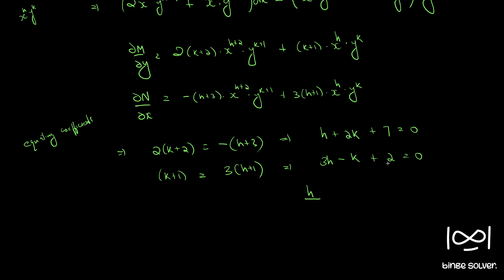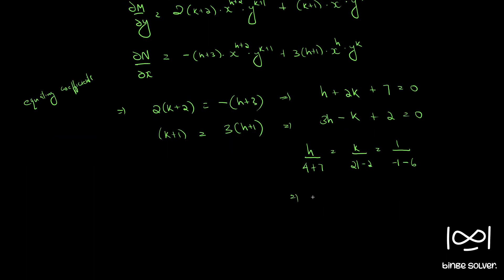Solving the system using Cramer's rule: h = −11/7 and k = −19/7.